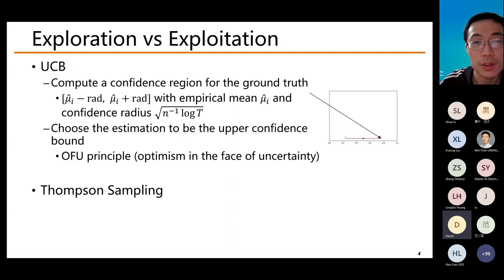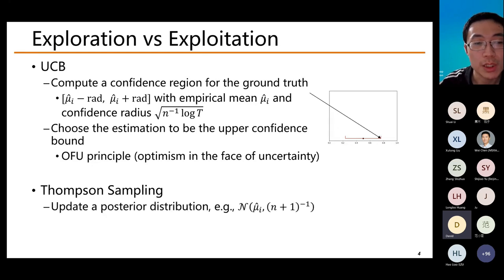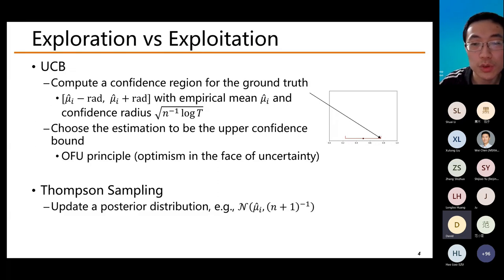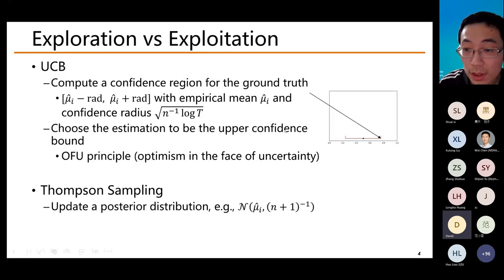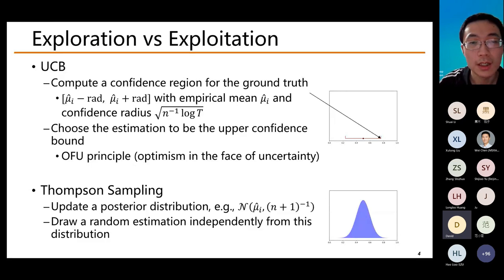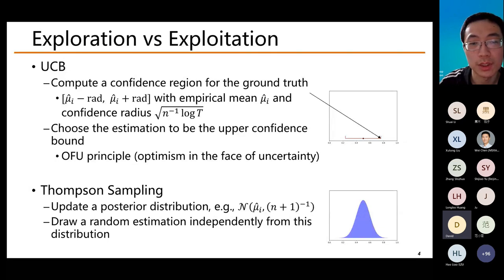In the Thompson Sampling algorithm, instead of computing the confidence region, we update a posterior distribution for the ground truth mu_i. For example, when using Gaussian priors and Gaussian observations, the posterior distribution of mu_i would be a Gaussian with mean equal to the empirical mean and variance equal to 1 over n plus 1. Then it draws a random estimation independently from this distribution, and chooses the arm with the largest estimation to pull at each time step.